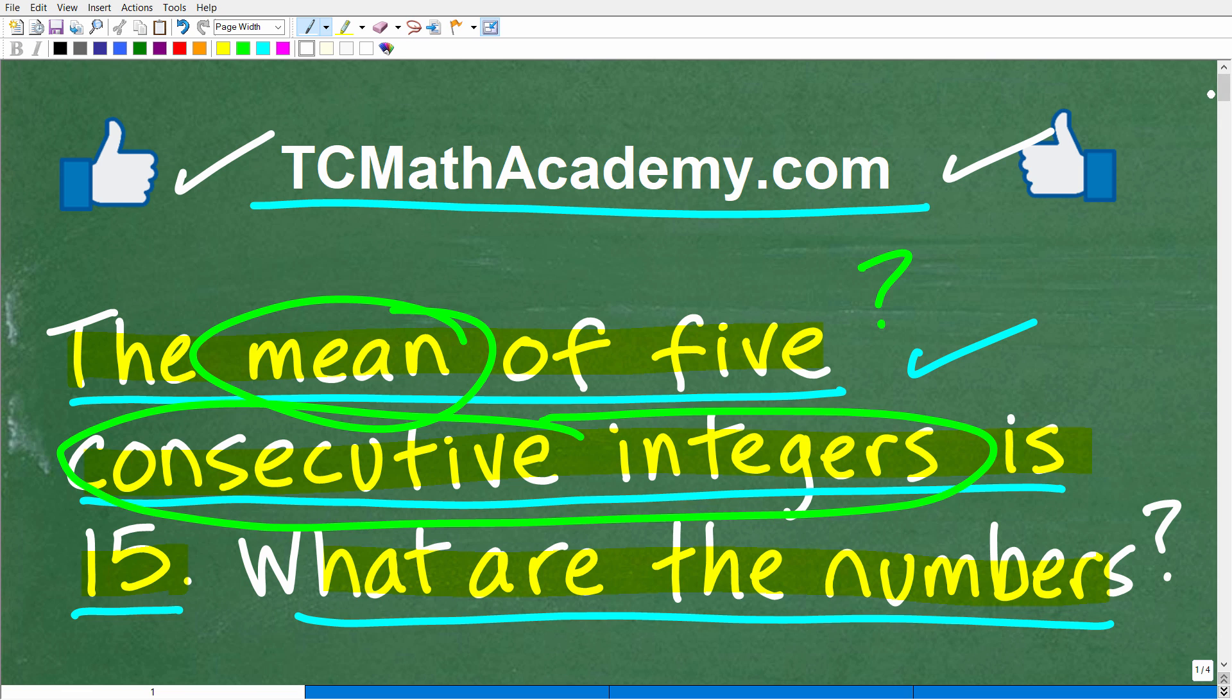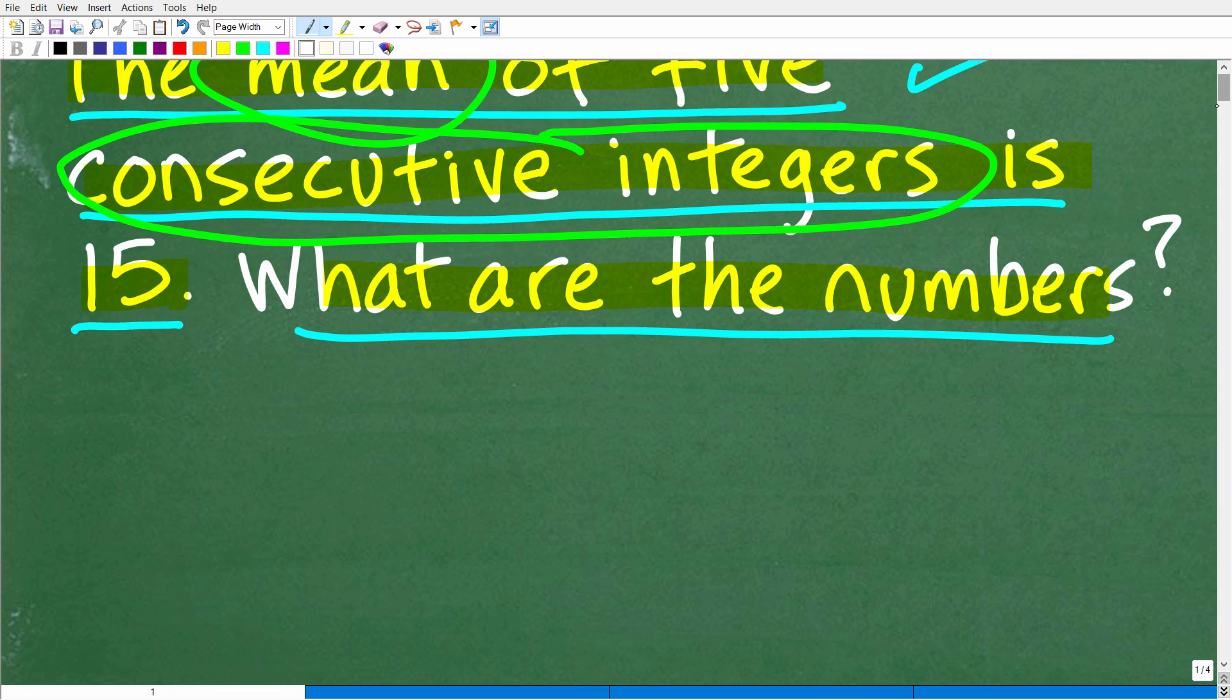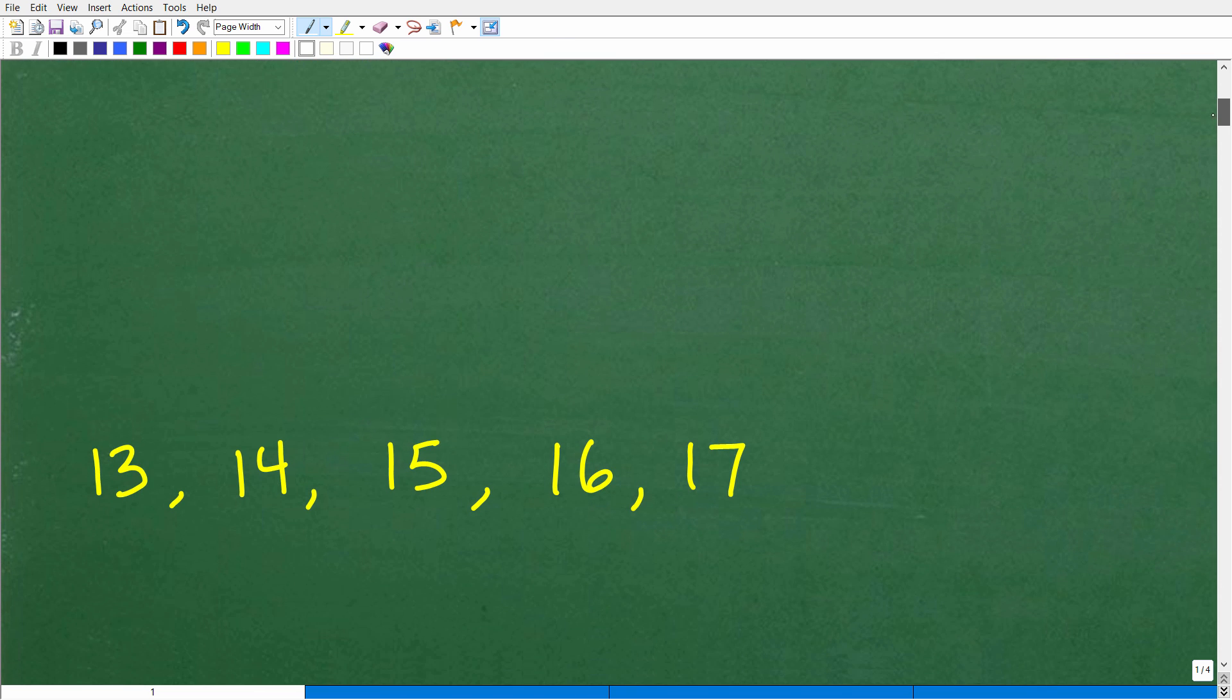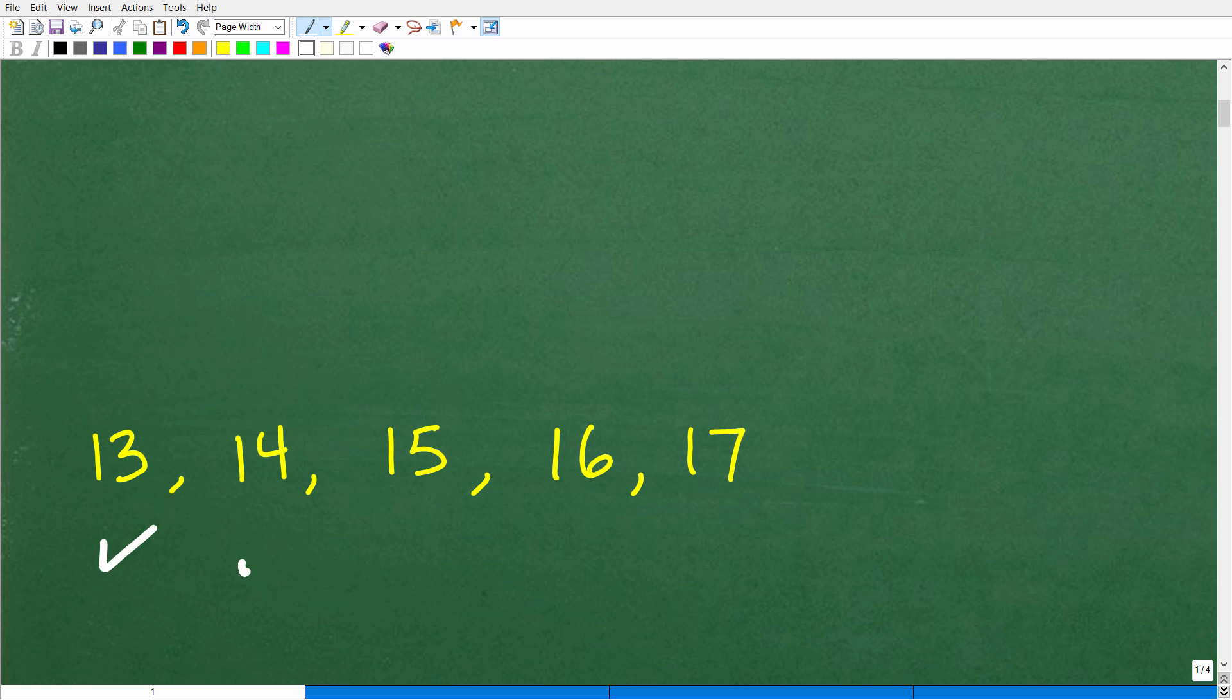But let's go ahead and take a look at what the answer is. Of course, we're looking for five consecutive integers. And if you did this right, you would have come up with these numbers right here: 13, 14, 15, 16, and 17. All right, now, how did you do?